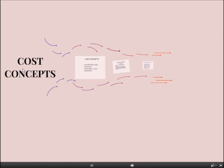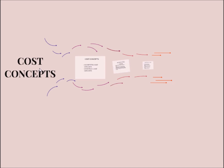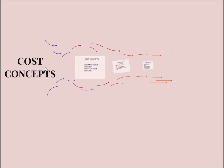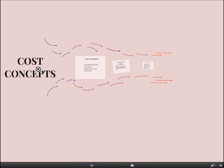Hello and welcome to edupediaworld.com. In some of our last sessions we have discussed about production theory, which was a detailed analysis of input-output relations in terms of physical quantities of input and output. However, it is very important to note that business decisions are generally taken on the basis of money values of the input and output. Each and every business firm basically tries to minimize its cost in order to maximize its profit, which is the ultimate aim of any producer. So in this session we are going to start with theory of cost, but before that let me tell you about some basic cost concepts.